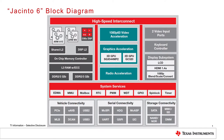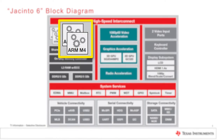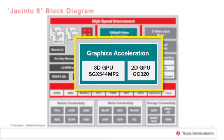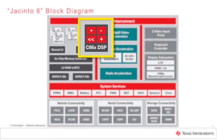TI provides an optimized Android solution for the Jacinto 6 family of processors that include ARM Cortex A15 cores, ARM Cortex M4 cores, multimedia accelerators, graphics engines, and the C6 series DSPs. These allow parallelization of the diverse set of processing tasks that are required for modern infotainment systems.